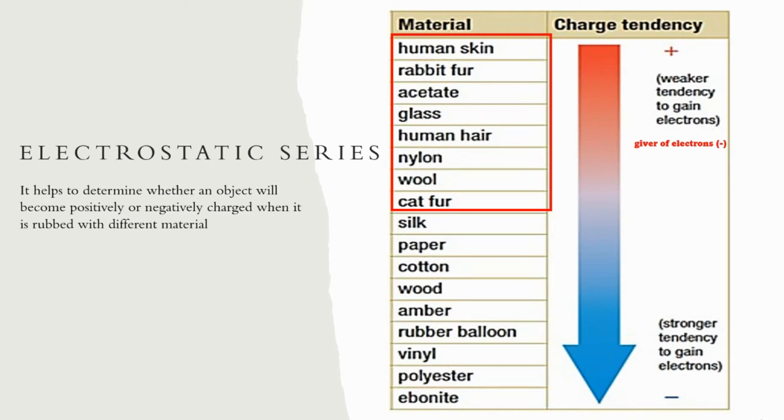Below are materials such as silk, paper, cotton, wood, amber, rubber balloon, vinyl, polyester, and ebonite have strongest tendency to gain electrons. They gain electrons from another object.